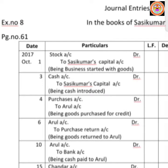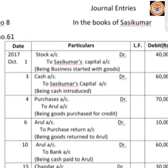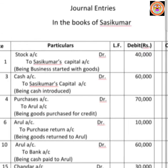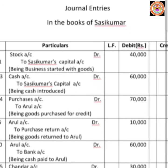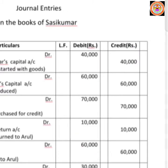You are going to do the sum in a single page. Take a page and allot the columns like this: first column is date, then particular column, then one small column for LF (LF means ledger folio number), then two amount columns — one for debit and another for credit.